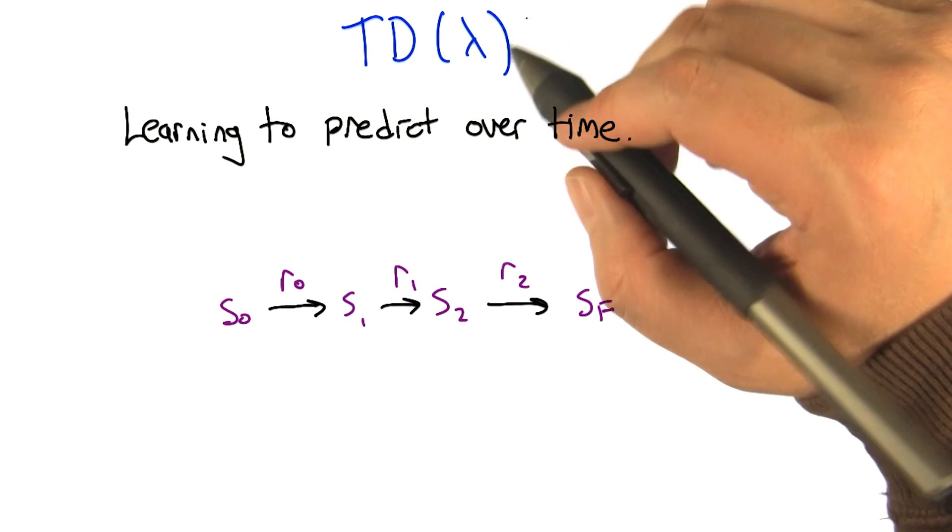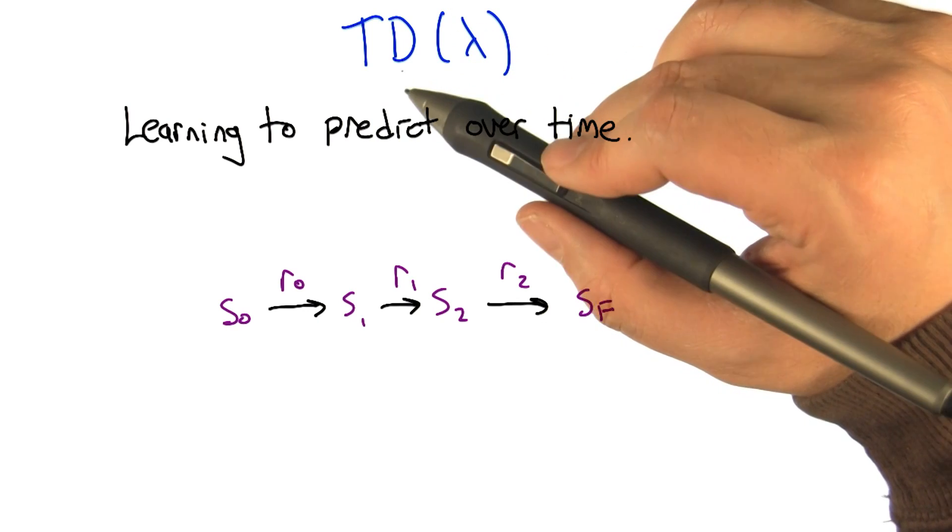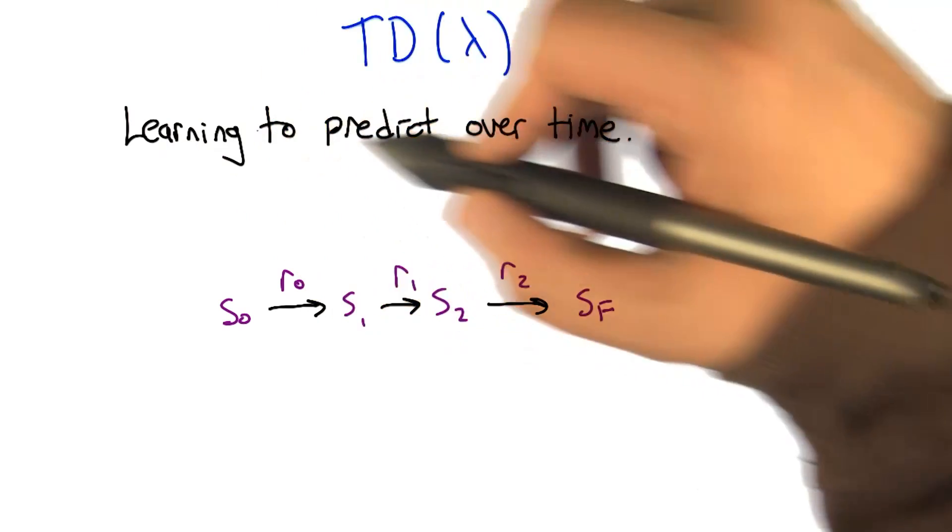So that brings us to temporal difference learning. The algorithm we're going to look at, originally by Sutton, is called TD lambda. This is a little lambda symbol. TD stands for temporal difference.